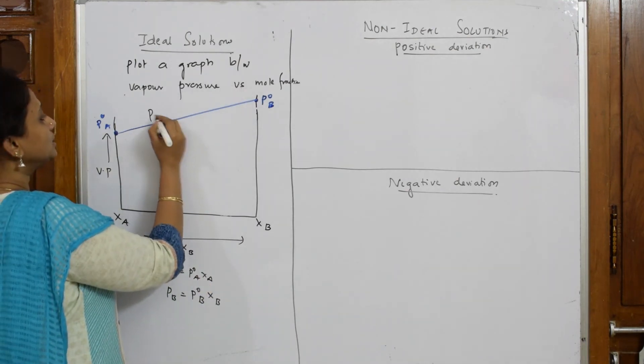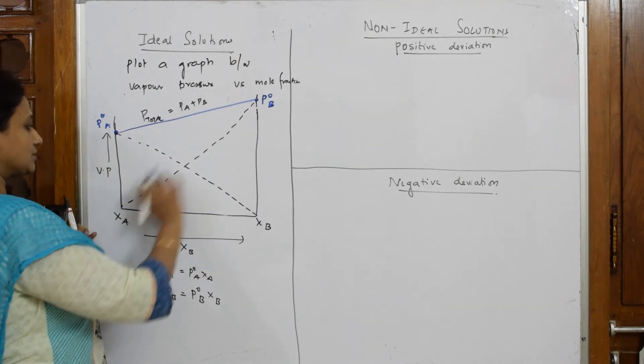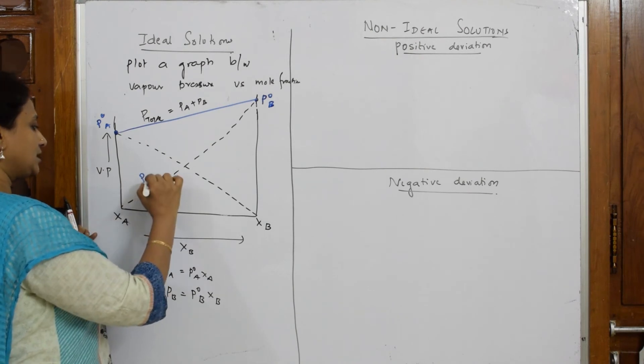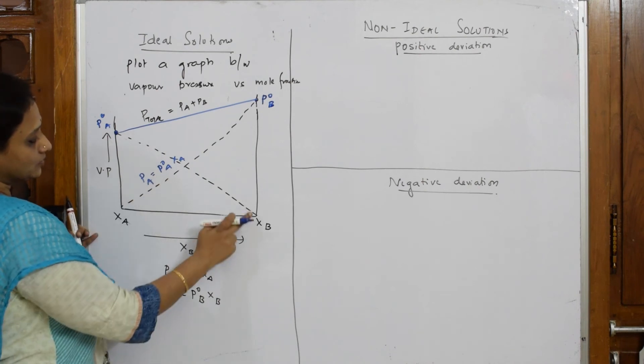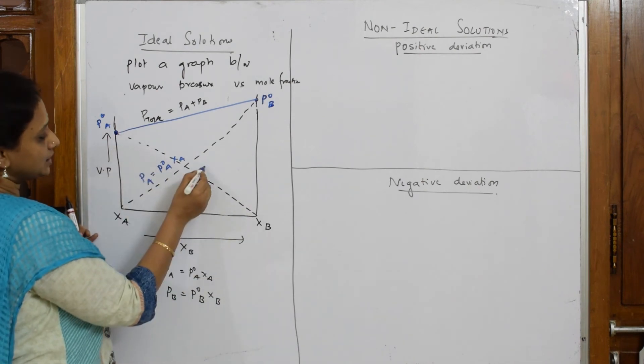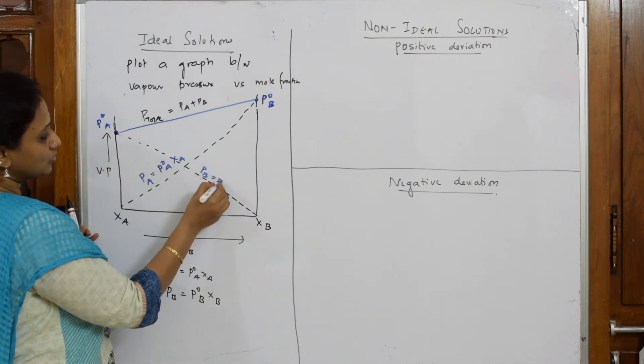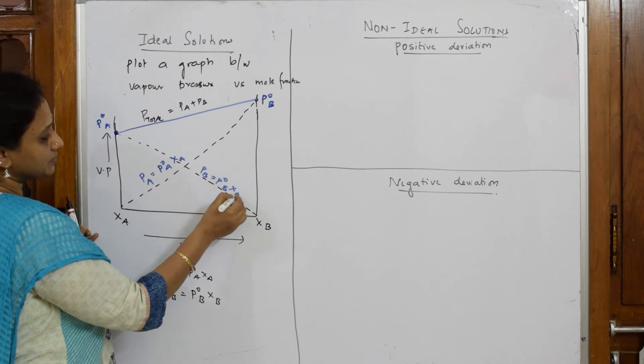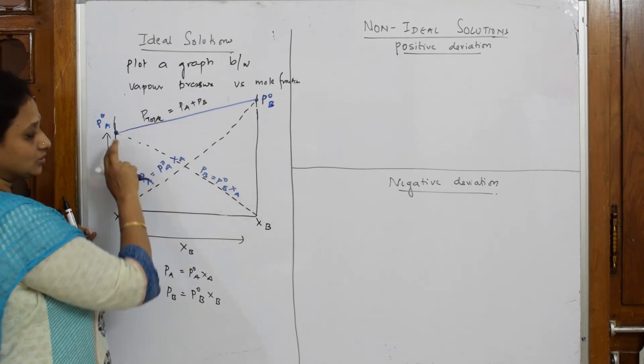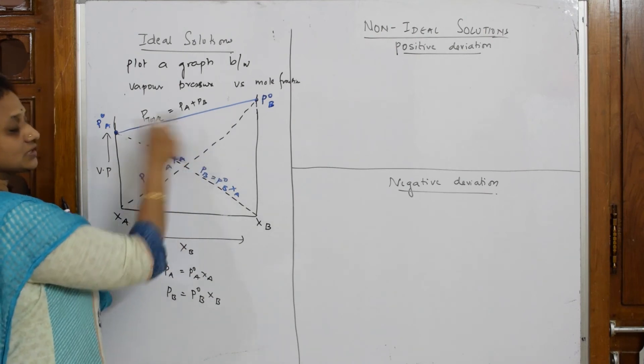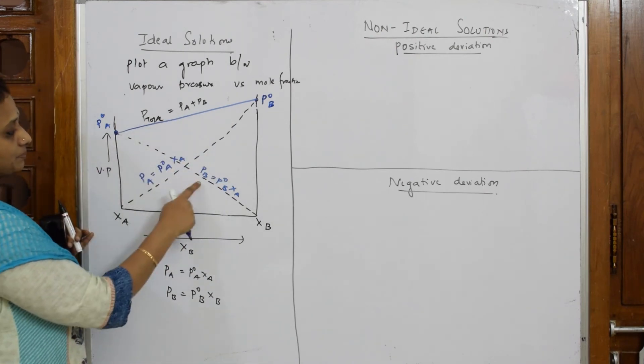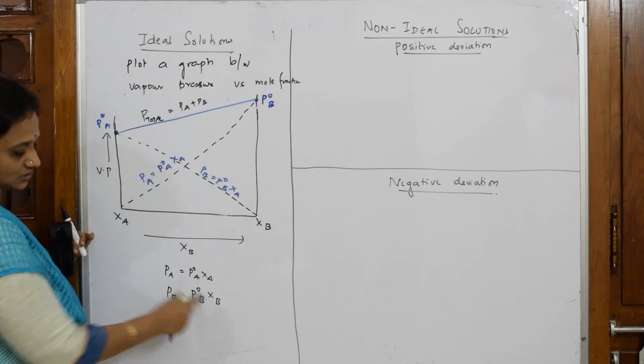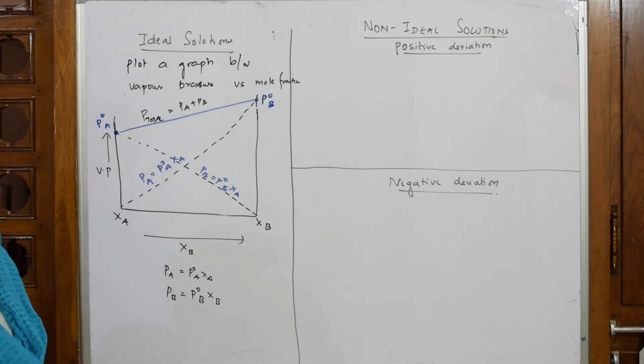If I have to write P total, now this particular line, this line is for XA which is equal to PA equals P naught A times XA. Now, this line corresponds to XB, PB is equal to P naught B times XB. The total of this is already written. Look here, this total and this total is written here. Because PA and PB is nothing but P naught A plus XA, that is what I have done. So, this is your ideal solution graph which obeys Raoult's law.